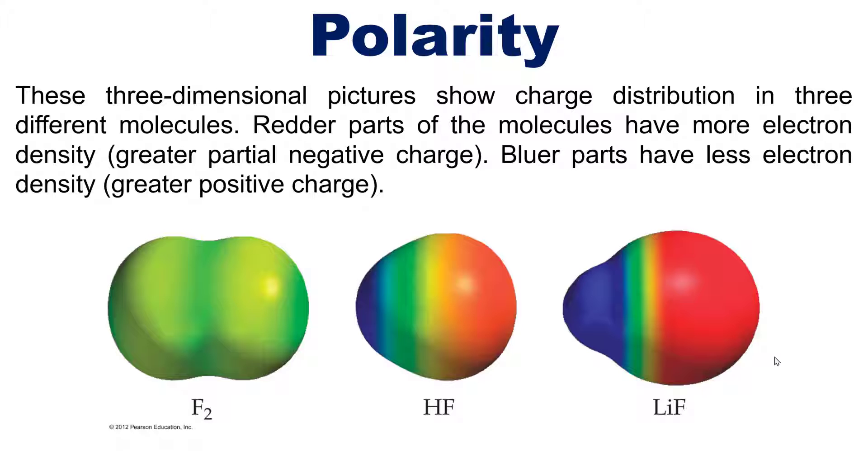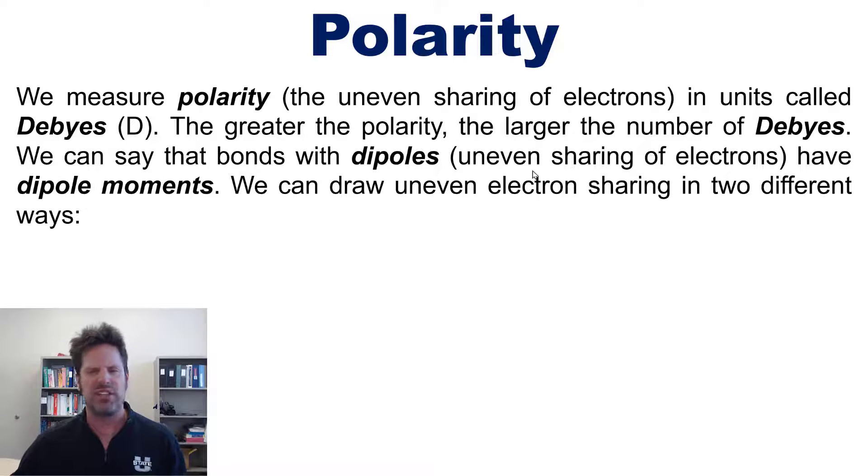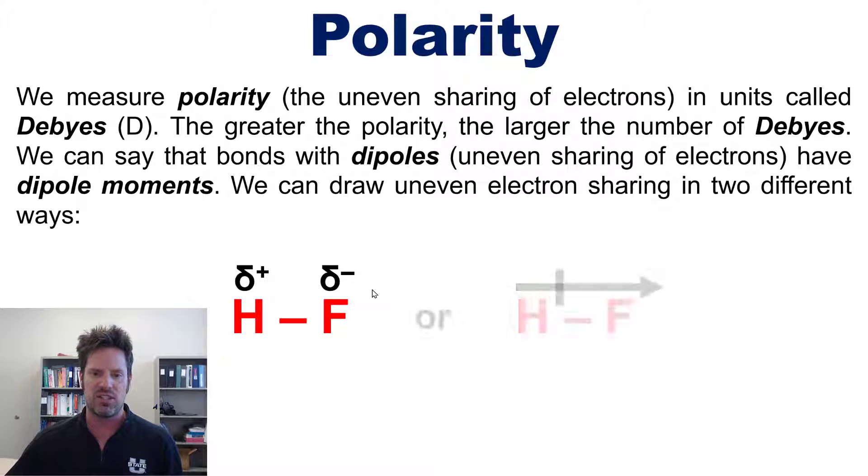All right, then we measure polarity—the uneven sharing of electrons—in units called debyes, depending on how you want to pronounce them. I like pronouncing it debbies because they remind me of the snack cakes. So the greater the polarity, the larger the number of debbies. We can say then that bonds with dipoles, that is an uneven sharing of electrons, have dipole moments. We can even draw electron sharing in two different ways, like this and like this, representing most of the electron density leaning towards the fluorine in this case.